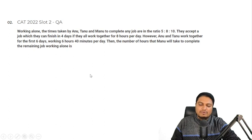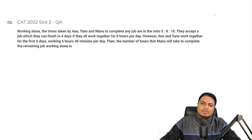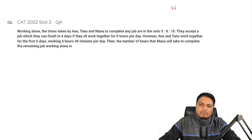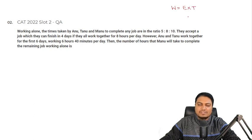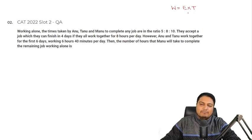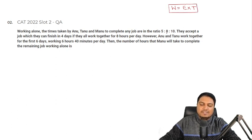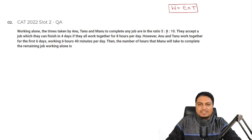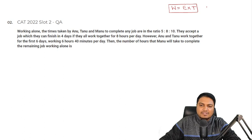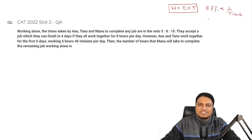This question is based on time and work. The key concept is: total work done = efficiency × time. Efficiency means how many units someone can produce per hour. The second important point is that efficiency is inversely proportional to time — so if you invert the time ratio, you get the efficiency ratio.